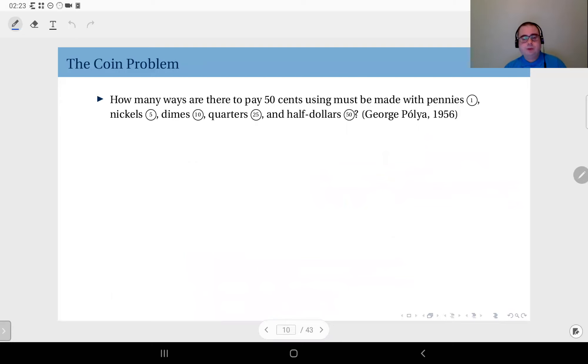Now, to demonstrate the usefulness of generating functions and how to approach a problem using them, we are going to use the so-called coin problem, or change problem, that is described by the Hungarian famous mathematician George Pólya in a paper he wrote in 1956.